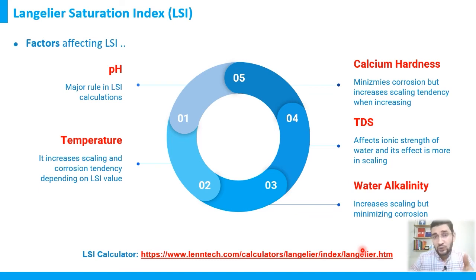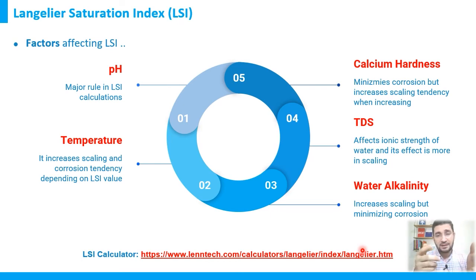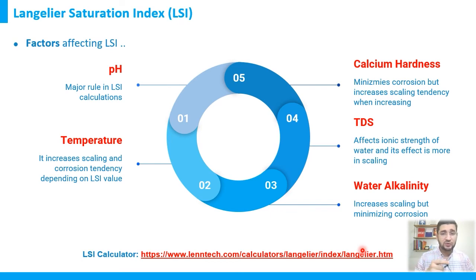These five parameters — water pH, temperature, calcium hardness, TDS, and water alkalinity (expressed as mg/L as calcium carbonate) — are what you need when using an online LSI calculator. Based on the resulting LSI value, you can determine whether the water will be scaling or corrosive, and how severe that scaling or corrosion will be in your specific application.